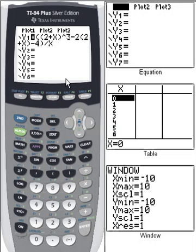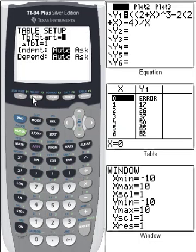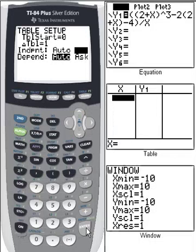Now what we're going to do - we could graph this and look, but we don't need to. We're going to use the table. So we're going to go to second table set because we want to have our table set a certain way. It doesn't really matter where it starts or what the change in the table value is, but we want to change this to be on ask. We want the independent to be on ask and the dependent to be on auto.